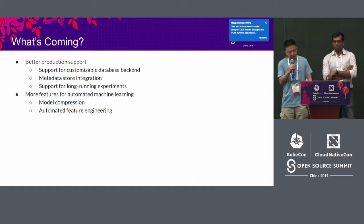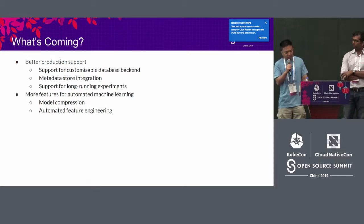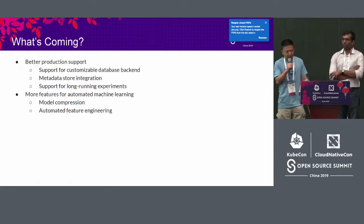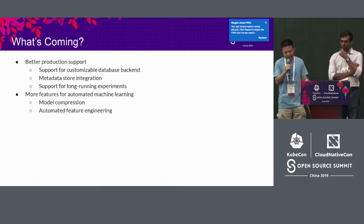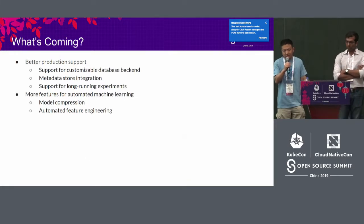Another aspect is adding more features relevant to automated machine learning, such as model compression and automated feature engineering. We've seen how Katib handles hyperparameters and architecture search — both related to the training process. Feature engineering is the step before training begins: selecting features, doing feature selection, feature processing, or transformations to transform your training data. These are things we're constantly researching.